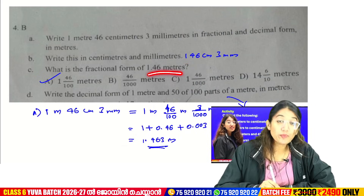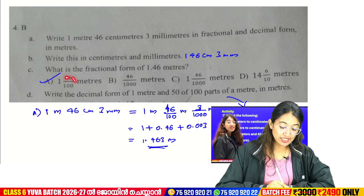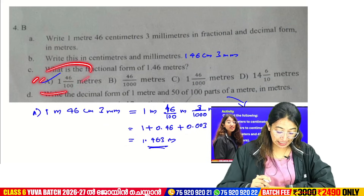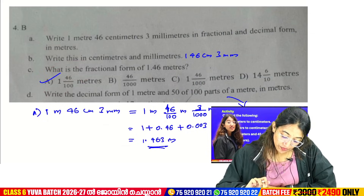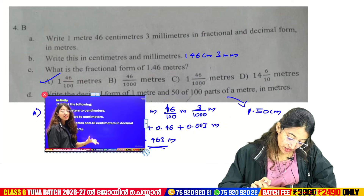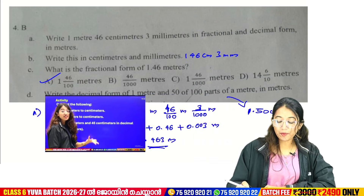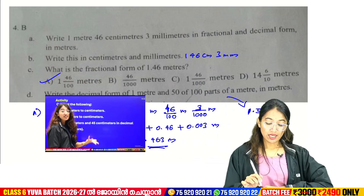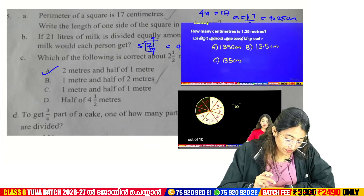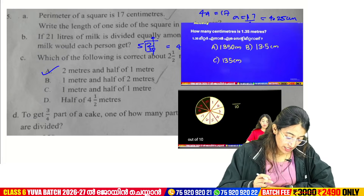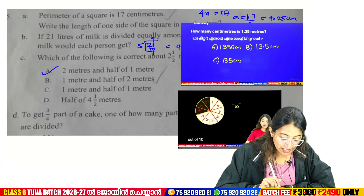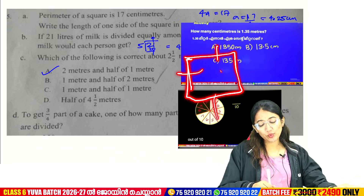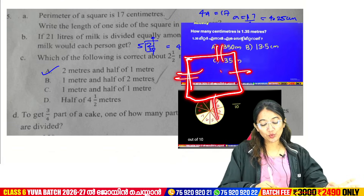If you write the decimal form of 1000 and 50 parts of 1000, you can write the decimal form. Perimeter of a square is 17 cm. Perimeter is 17 cm — that is 17 cm divided by 4, which gives 4 cm per side.